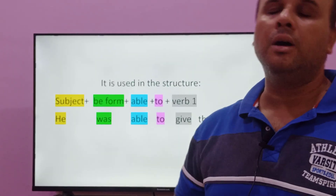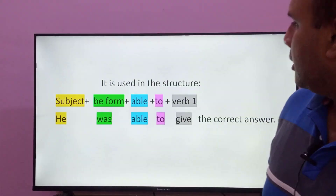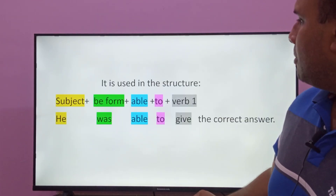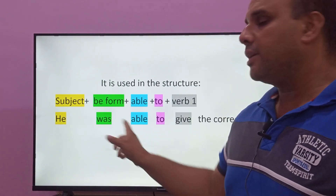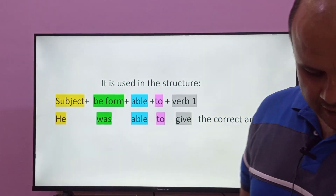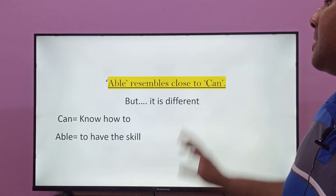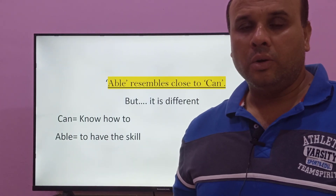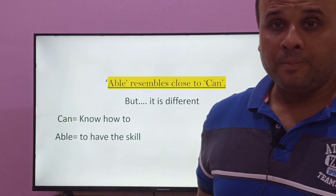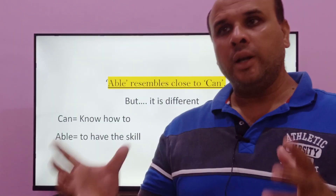So now we know how to use the word 'able' to construct sentences. 'Able' is an adjective, and it can be used in sentences quite easily. Now, I want to tell you that 'able' is sometimes similar in sound or meaning to 'can.' When there is an answer — when 'can' is used — it often represents knowledge.